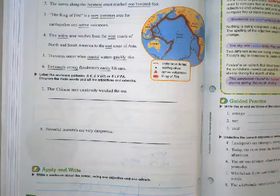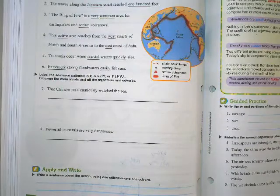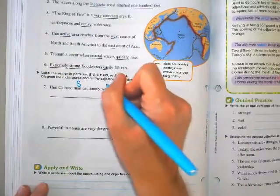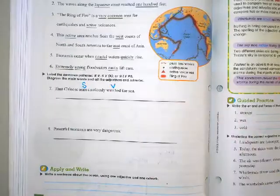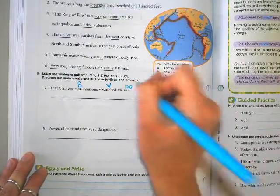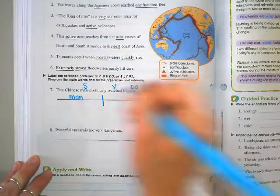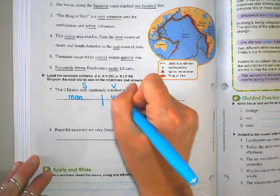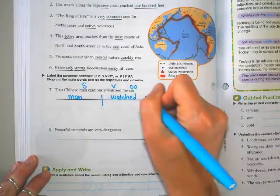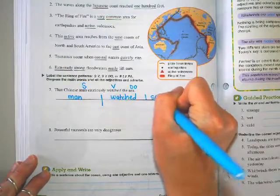It says that Chinese man cautiously watched the sea. First we have to look at the pattern. What is that whole sentence about? It's about a man. What did the man do? He watched, which is your verb. And what did he watch? He watched the sea. So that's your direct object. I'm going to draw our diagram. Man watched the half line sea.